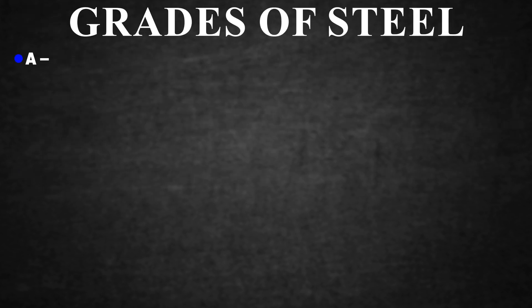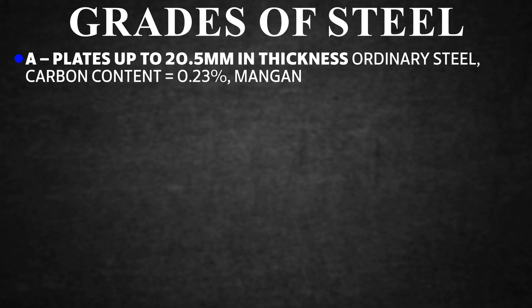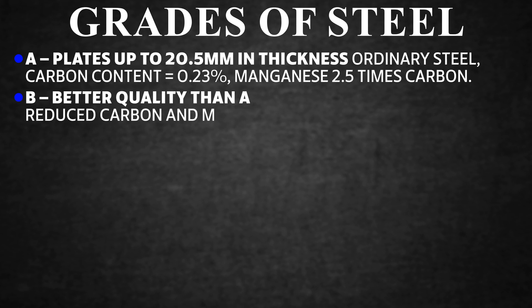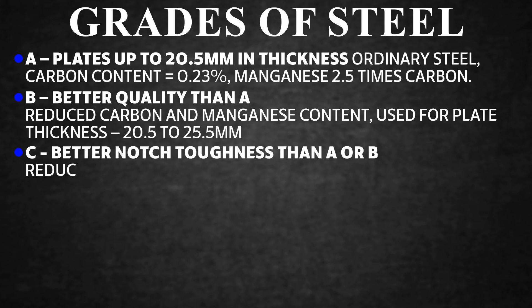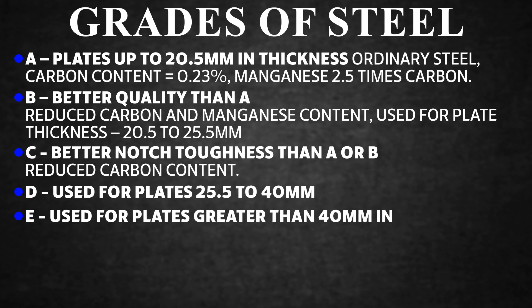Grades of Steel. Grade A: plates up to 20.5 mm thickness; carbon content 0.23%, manganese 2.5 times carbon. Grade B: better quality than A, reduced carbon and manganese content, used for plate thickness 20.5 to 25.5 mm. Grade C: better notch-toughness than A or B, reduced carbon content. Grade D: used for plates 25.5 to 40 mm. Grade E: used for plates greater than 40 mm in thickness.